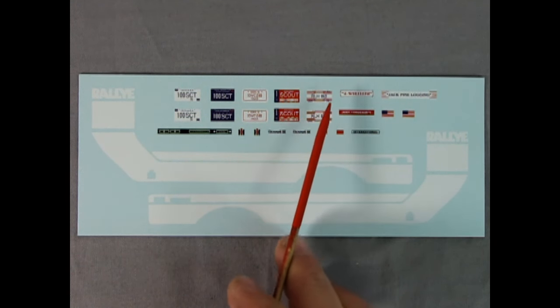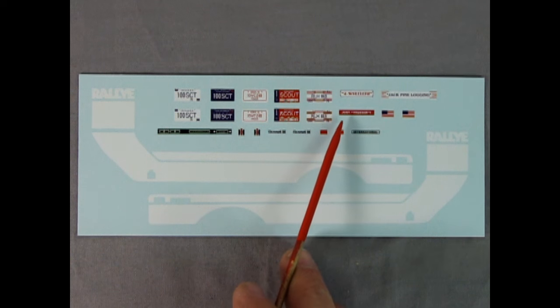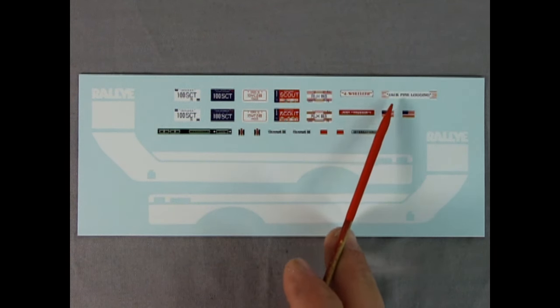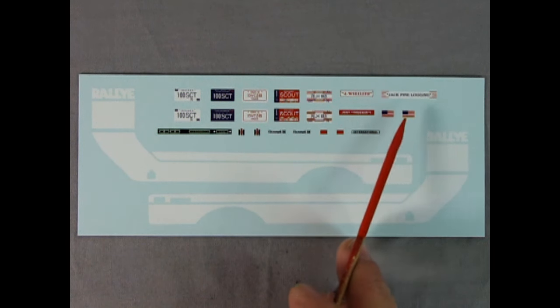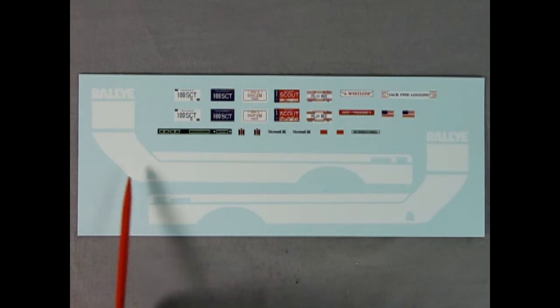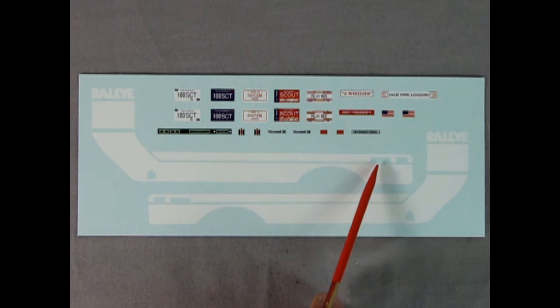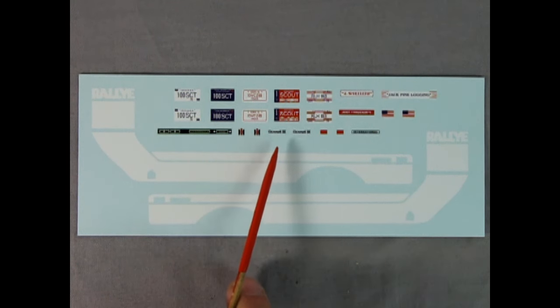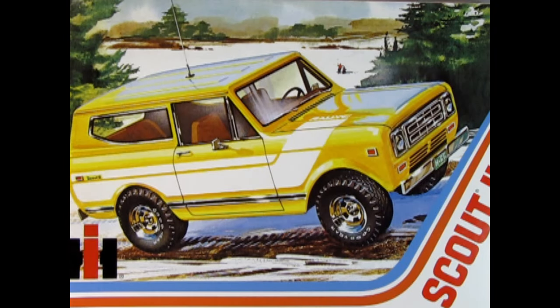And then some bumper stickers, like four wheels and just trucking, or maybe four wheelers, as well as jack pine logging and some American flags. And then here we have our stripes. They also have cutouts here for the side marker lights, as well as the International Harvester logo. You can scrape these off of the model and use the decals if you wish. But overall, that is our decal sheet.